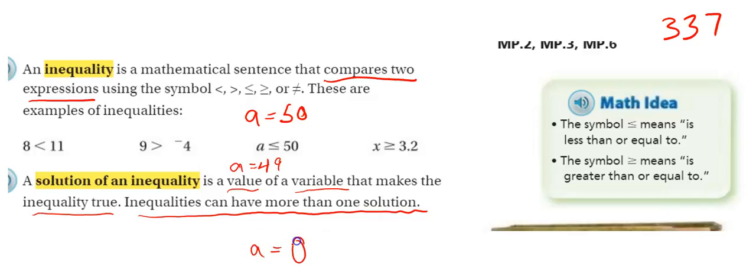A could equal 0, and that would keep this expression true. But A could not equal 102. It can't equal 102 because that would be greater than 50, not less than 50.